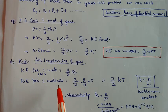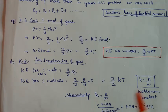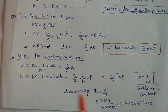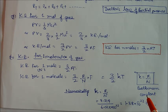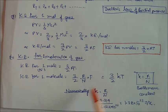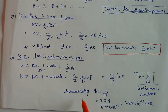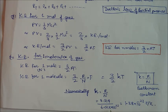The kinetic energy for one molecule is (3/2) × (R/N) × T, where N is Avogadro's number. The ratio R/N is called the Boltzmann constant K, named after the scientist Boltzmann. So kinetic energy per molecule = (3/2)KT. Numerically, K = R/N = 8.31 / (6.022×10²³) = 1.38×10⁻²³ J/K. This completes the derivations of various ideal gas laws from the kinetic gas equation.